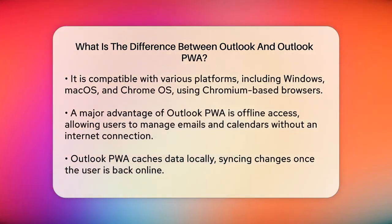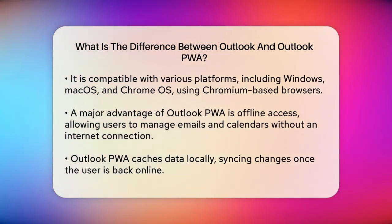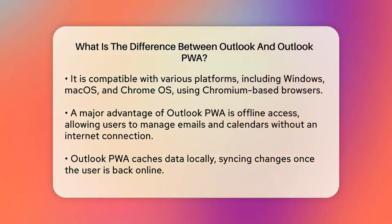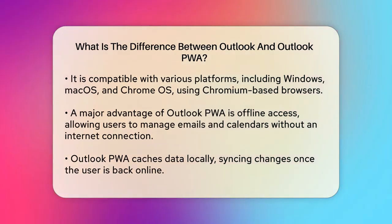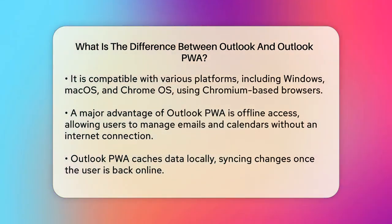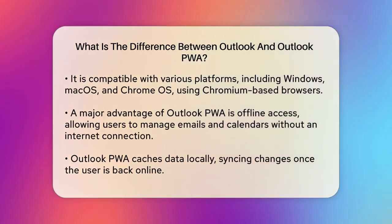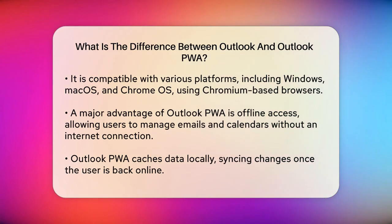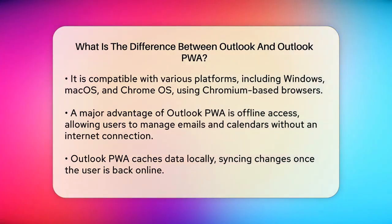Outlook PWA can be installed on your computer like a native app, allowing you to launch it from your taskbar or start menu. This makes it feel more like a dedicated application rather than just a website. You can install it on various platforms, including Windows, Mac OS, and Chrome OS, using a Chromium-based browser like Chrome or Edge.